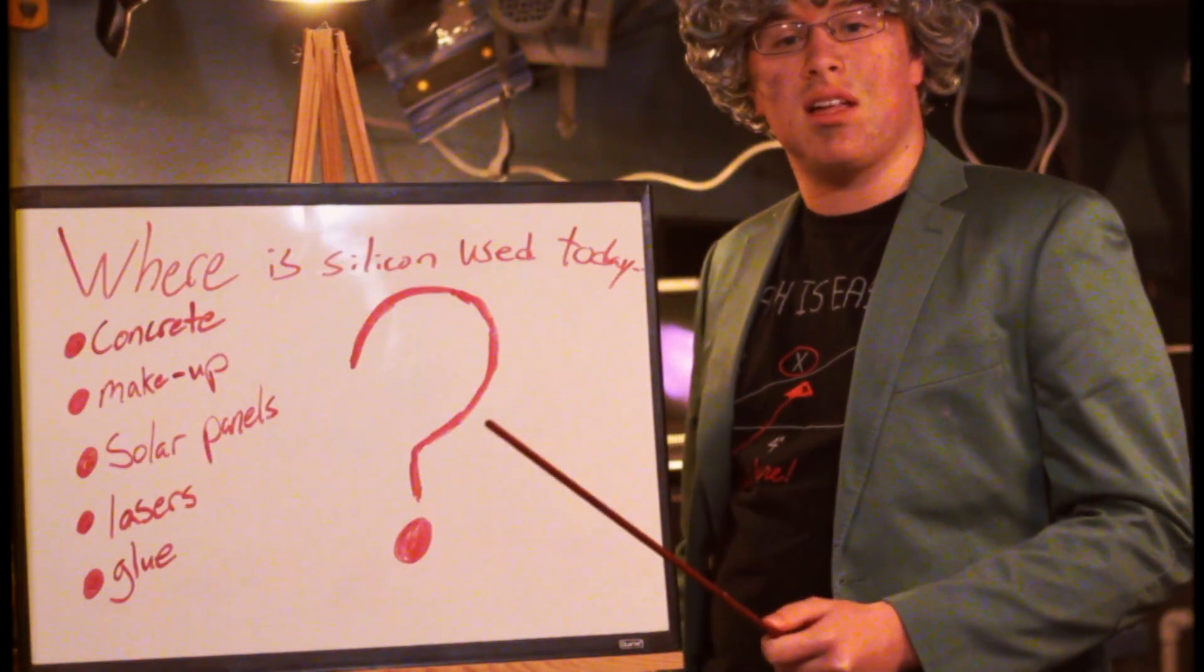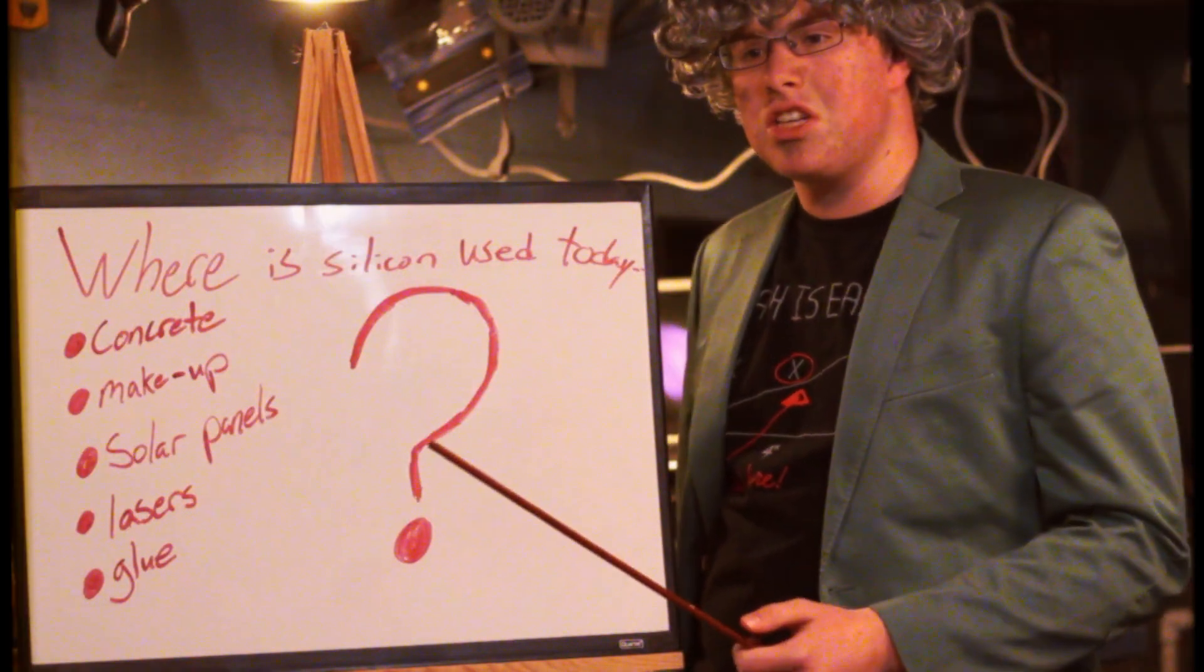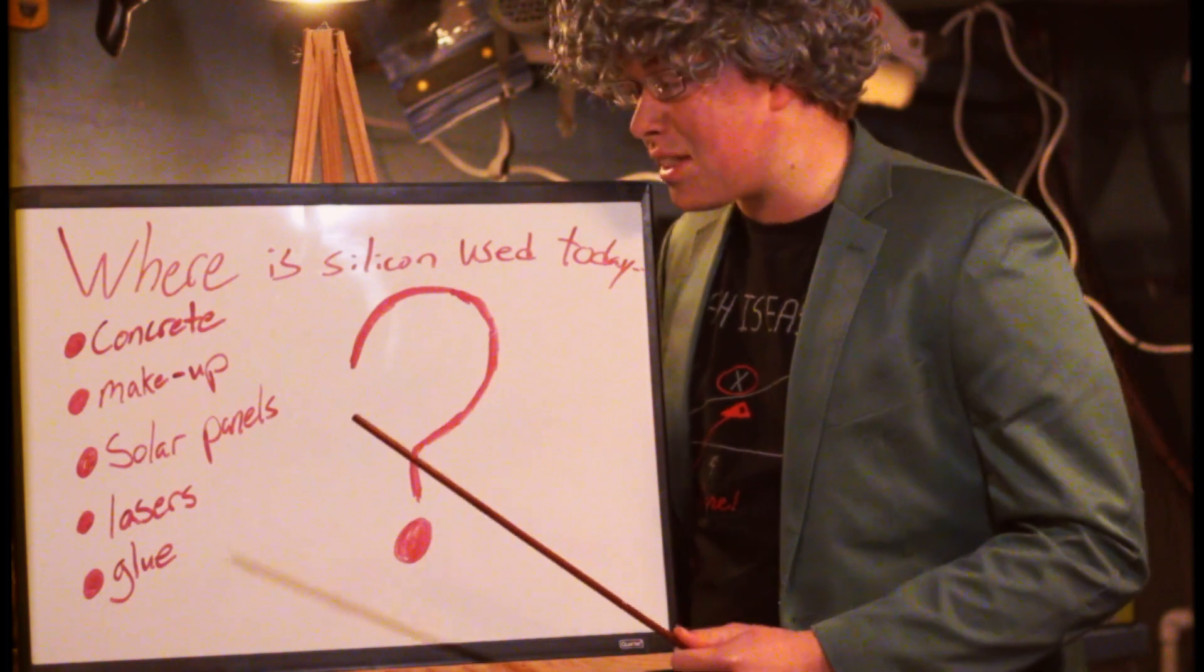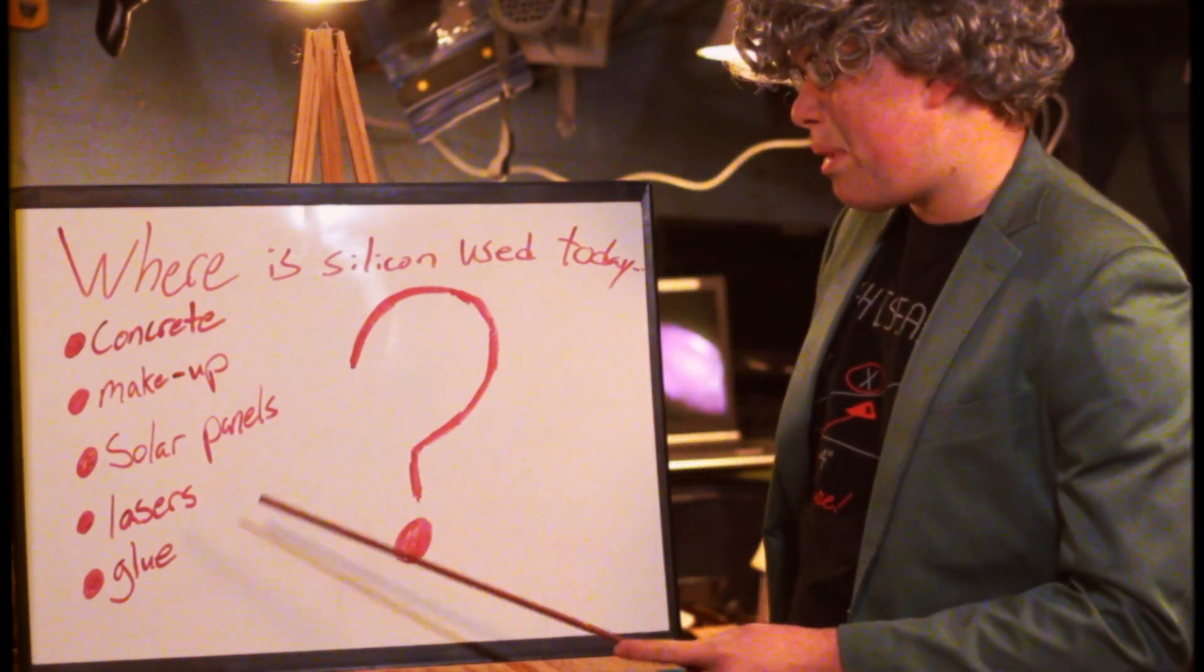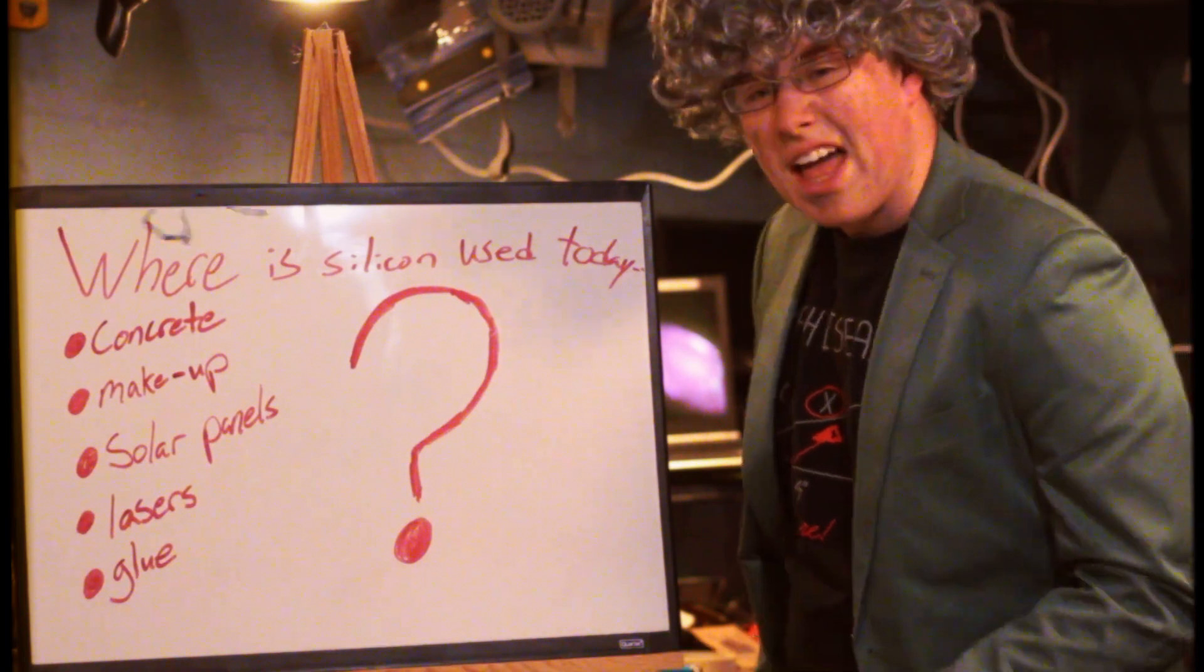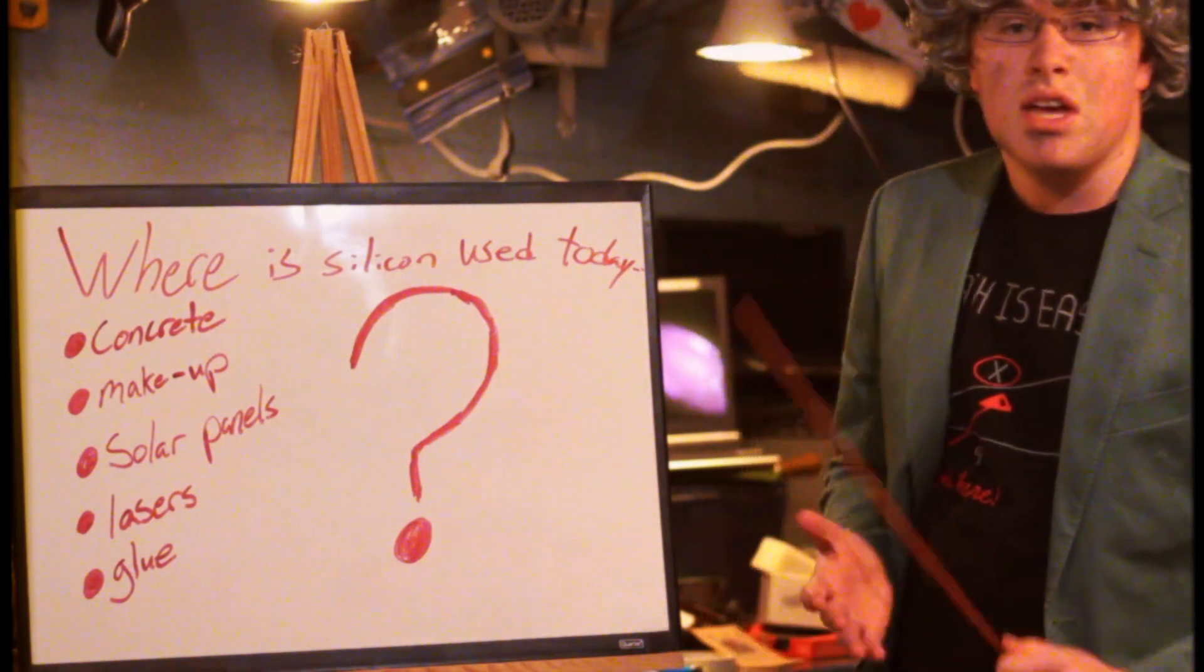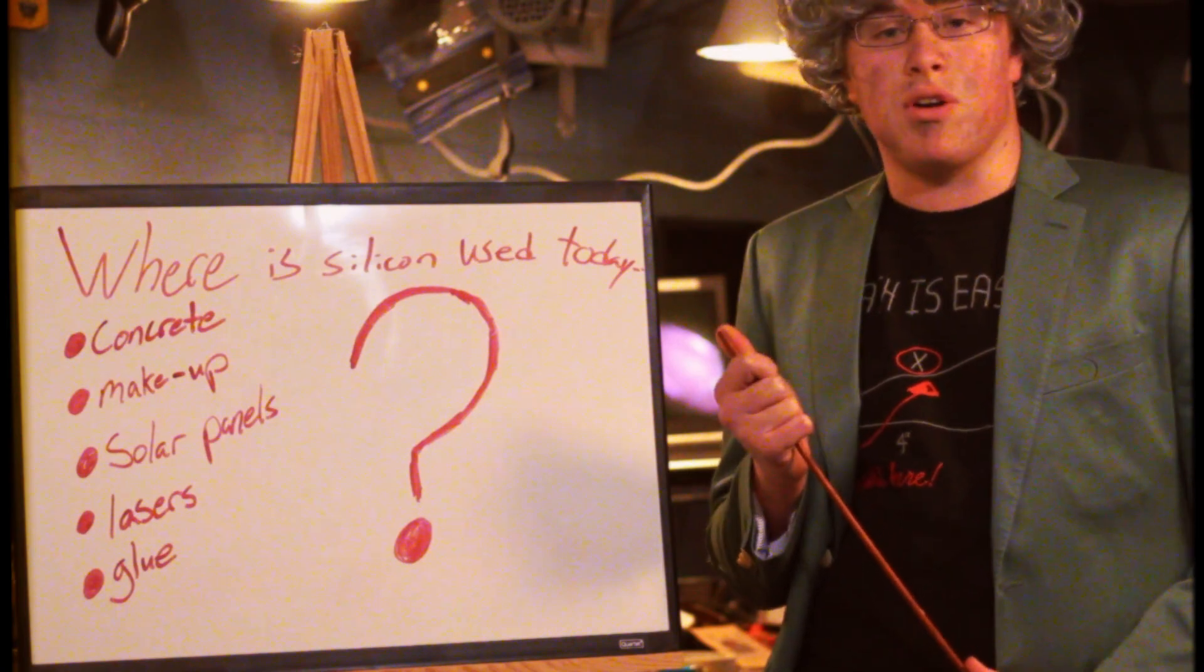Now that you know how to make silicon, you might be asking, where is it used? Well, I'm glad you asked. Today it's used in concrete, makeup, solar panels, lasers, glue, and the most impact that it's had on this earth is in computers and cell phones.